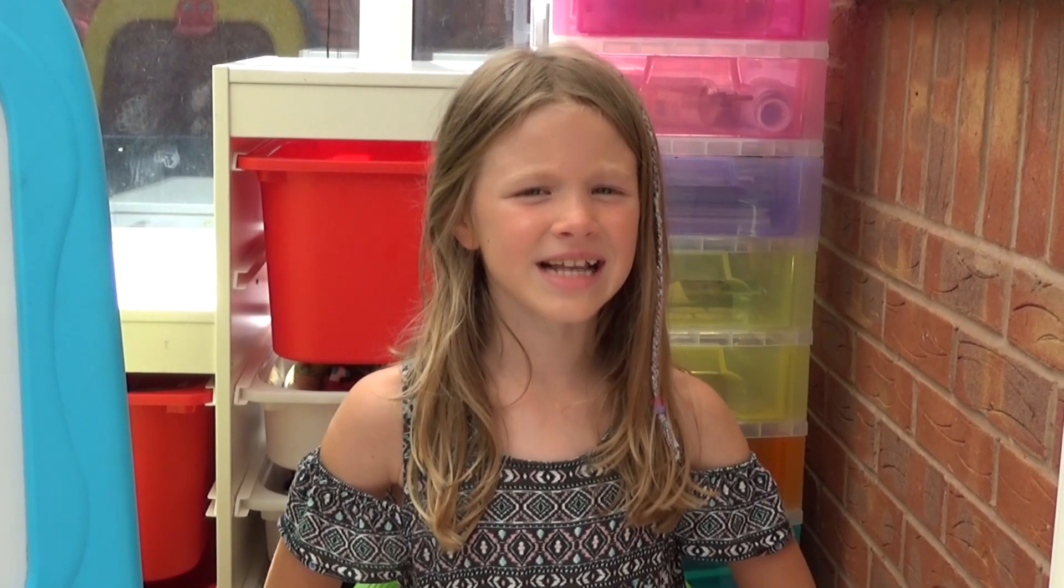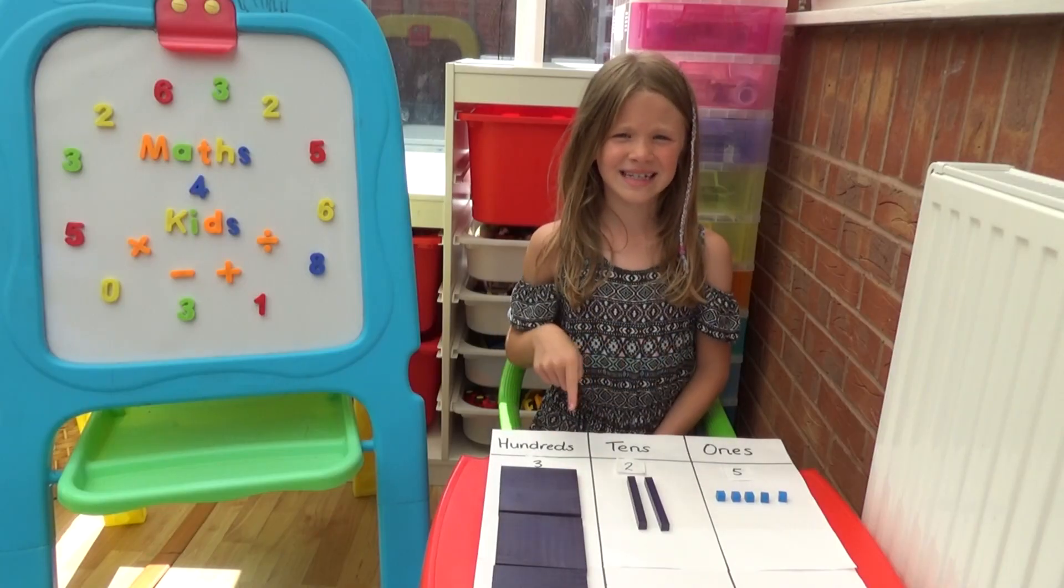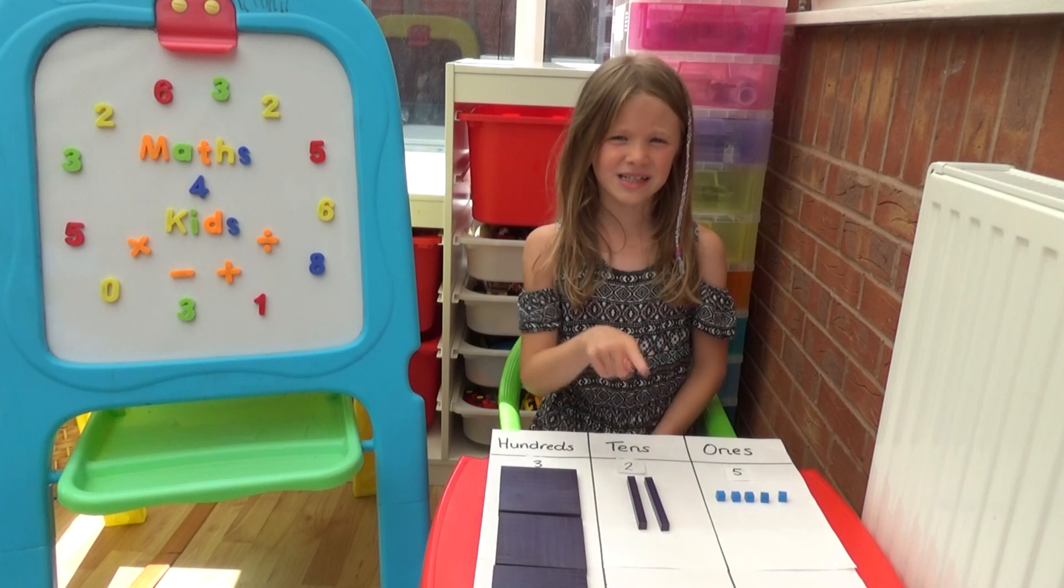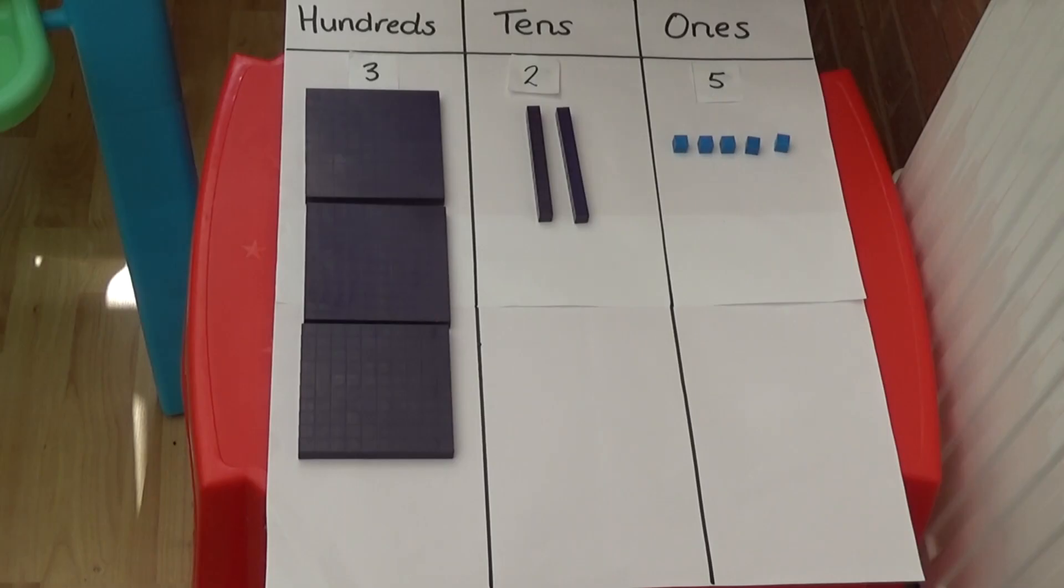First I'm going to look at adding 10 to a number. If I add 10 to this number, I only need to look at the tens column because the hundreds and ones won't change. To add 10, I need to add another tens rod. So my number now is 335.